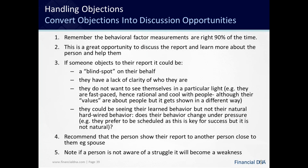Objections are normal — convert them to a discussion opportunity. We always recommend that people show their report to their spouse, particularly when there's an objection, because the spouse will see it and provide the clarification that's needed. This is an additional conversation in a very safe framework to unlock blind spots about the husband and wife.